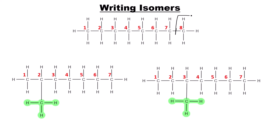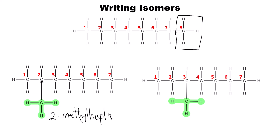If I position the methyl group on carbon number two, I get a new isomer of C₈H₁₈. This isomer is known as 2-methylheptane — 'methyl' because of the methyl group, and 'heptane' because there are seven carbons in the main chain. Note that placing this methyl group on the other end carbon two, counting from right to left, still gives 2-methylheptane.